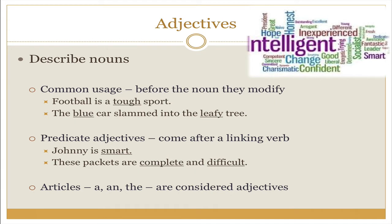We can also use adjectives in a predicate adjective scenario, where the adjective comes after a linking verb. The subject is linked to the predicate by a linking verb — a verb form of to be. For example, Johnny is smart. What is Johnny? Smart. So rather than say something like smart Johnny did his homework, we can use a predicate adjective, placing the adjective in the predicate and linking it to its subject. In addition, the articles a, an, and the are considered adjectives. Articles fit into that group of parts of speech because they tell us which one. Which car? The car.